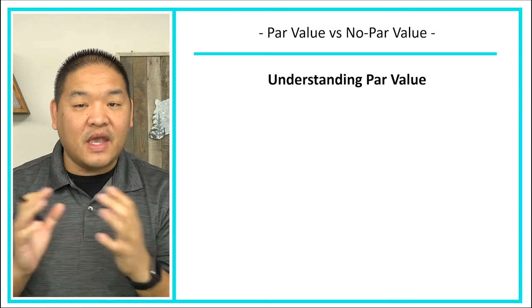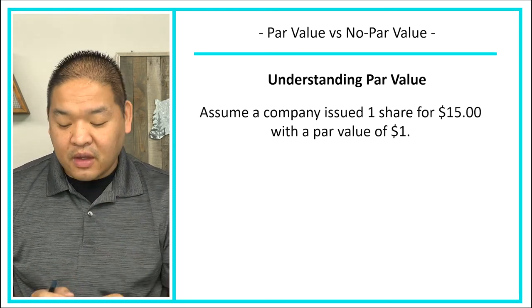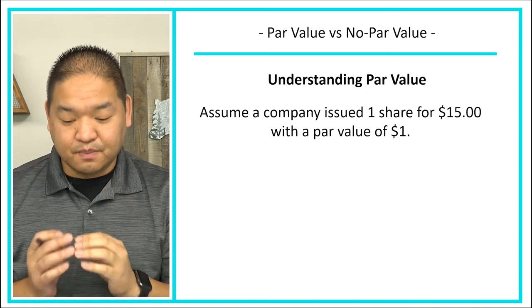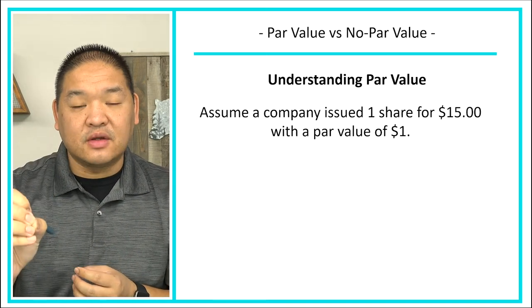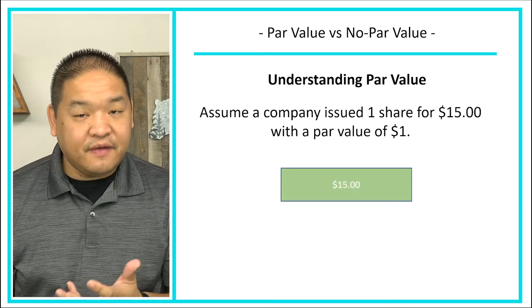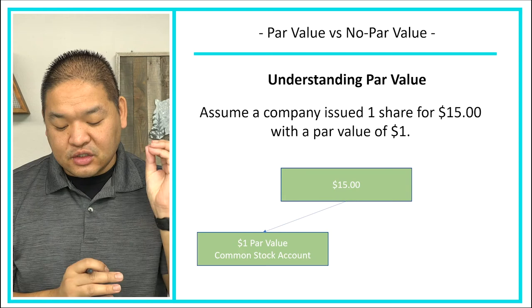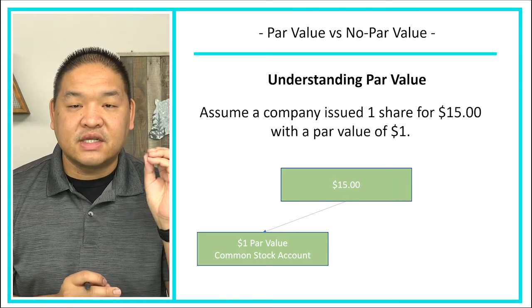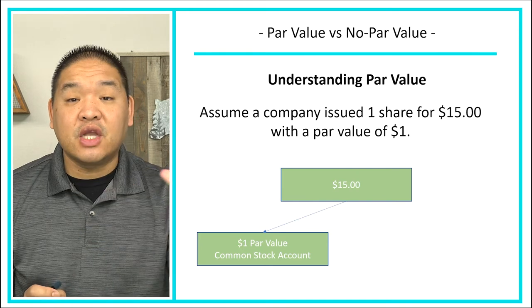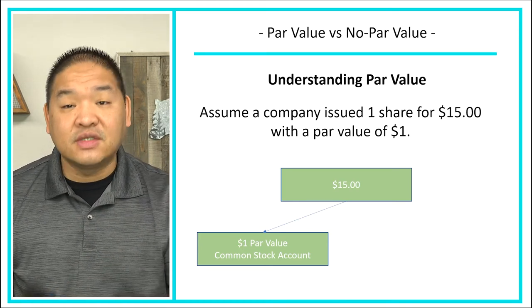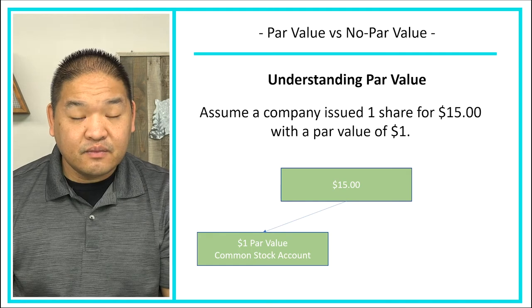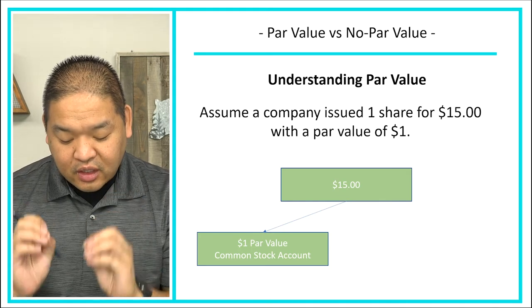Here's a picture of what that looks like. Assume a company issues one share to the public for $15 with a par value of $1. We've got $15 total, and we're going to split out $1 to go into the common stock account — that accounts for the par value. Common stock will only hold the par value amount. So if we issued a thousand shares, we'd put a thousand shares times $1 par value, which gives us $1,000 in the common stock account.